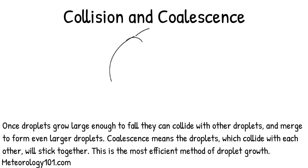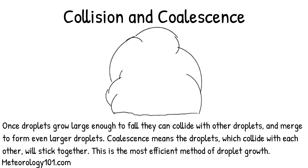Once droplets grow large enough to fall, they can collide with other droplets and merge to form even larger droplets. Coalescence means the droplets which collide with each other will stick together. This is the most efficient method of droplet growth.